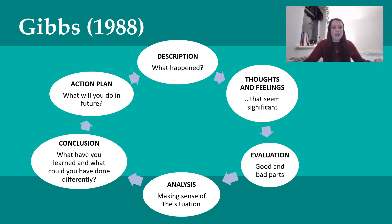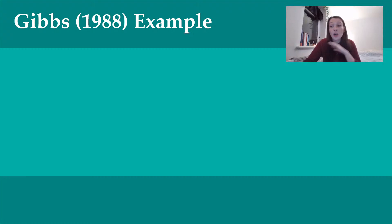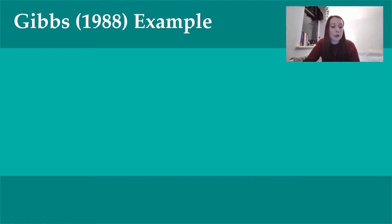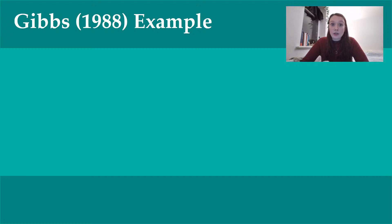That's a very brief outline of the Gibbs model, but it's often quite helpful to cover some examples. I'm going to use the same example for both models, just to give you a different perspective on both. When I was working in substance misuse, I was a client's key worker and it became apparent that there were some safeguarding concerns. There was a five-year-old child at home who knew what a crack pipe was, knew what heroin was, and knew not to touch the heroin or she would be in trouble.